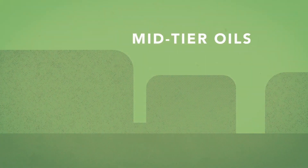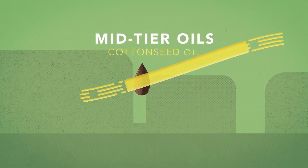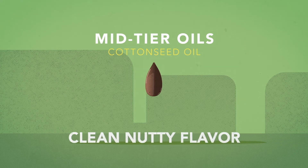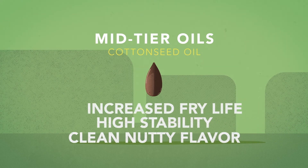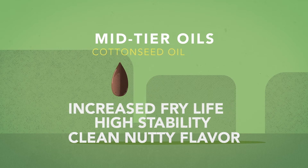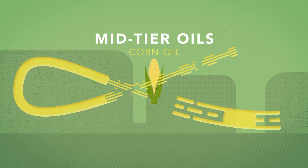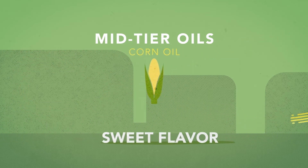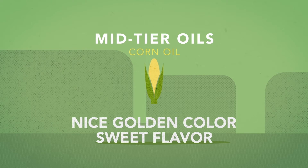Moving into mid-tier vegetable oils, cottonseed provides a clean, nutty flavor with high stability and increased fry life. Corn oil complements food with a sweet flavor and imparts a nice, golden color to fried foods.